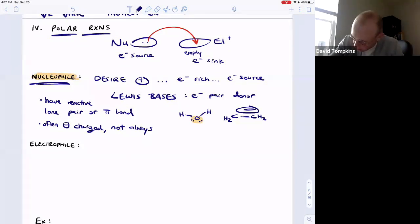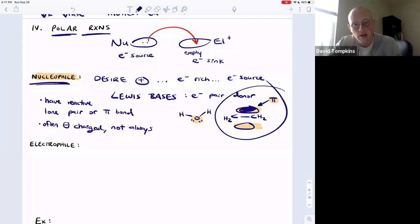The pi electron density above and below the plane of an alkene - reactive pi bonds are also nucleophiles. That's going to be the nucleophile that we use for the next few weeks. That'll be the common denominator - all the reactions we do for a while are going to start with that C-C pi bond.